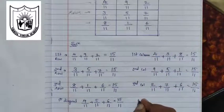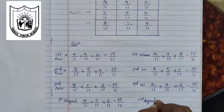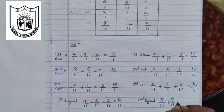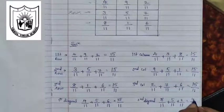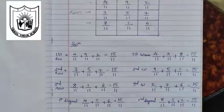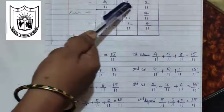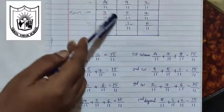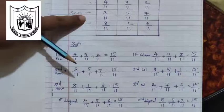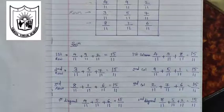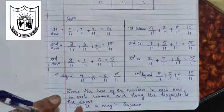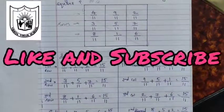Let us check the other diagonal from the right-hand side — these three numbers. Second diagonal: 8 upon 11 plus 5 upon 11 plus 2 upon 11, giving 15 upon 11. So when we take the sum of numbers in each row, in each column and along the diagonals, we get the same answer, that is 15 upon 11. Therefore we can say that this square is a magic square. This is so interesting — whether you add the fractions in a row, in a column, or along the diagonals, we have got the same answer, that is 15 upon 11.